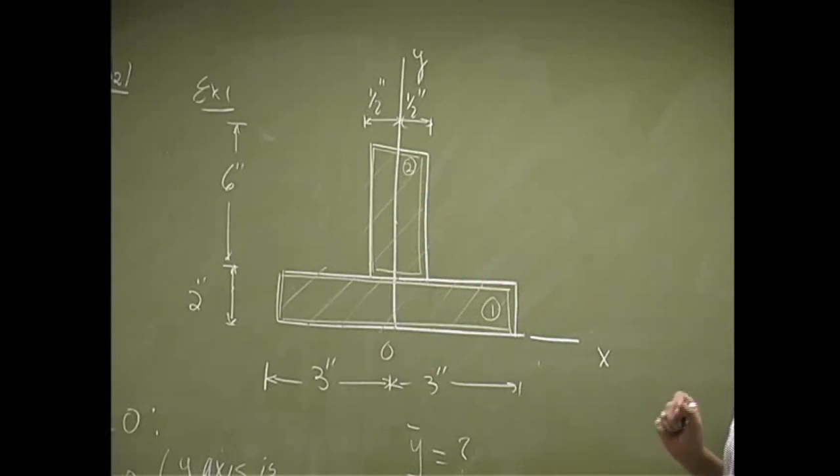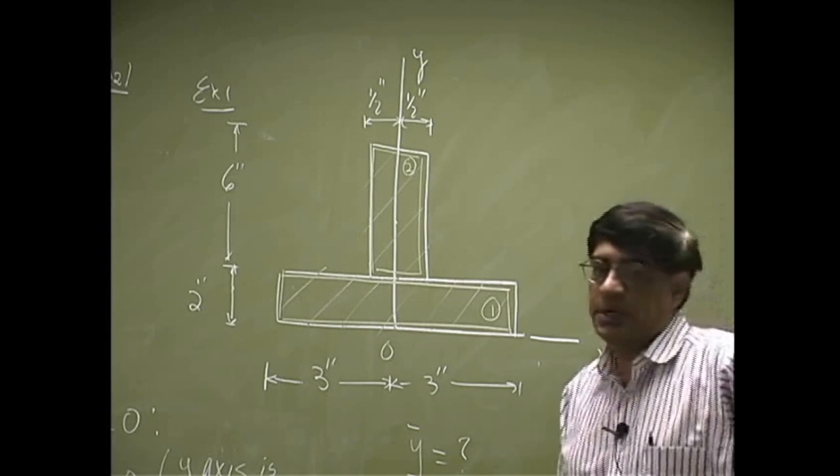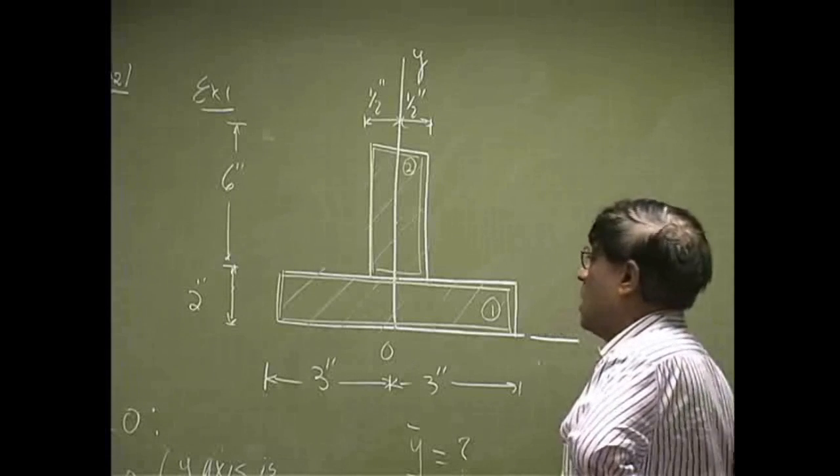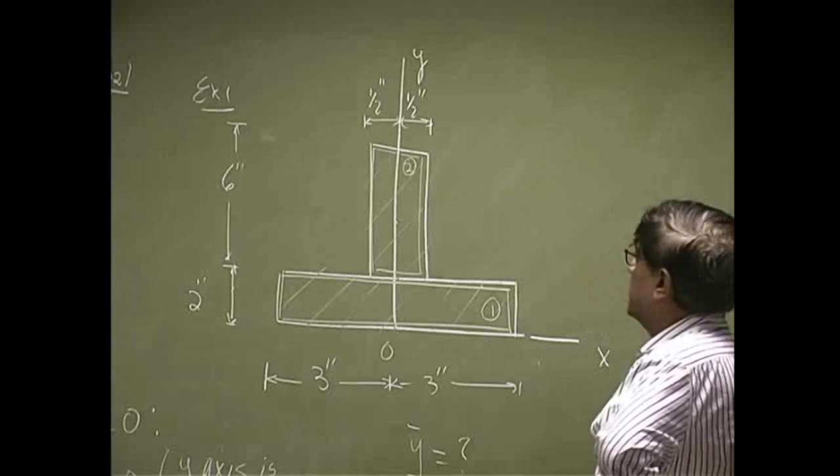So we divide the actual T-section into two sections, and those are two. So what happens to be, in this case, rectangles.